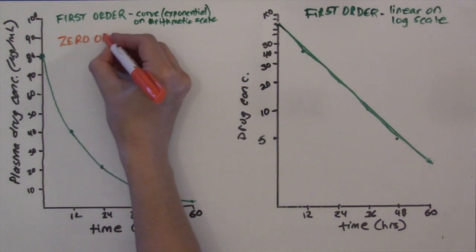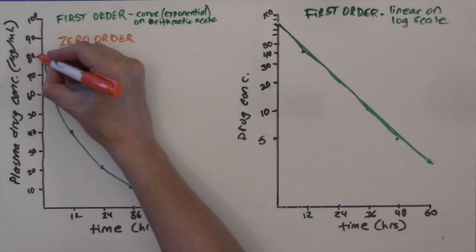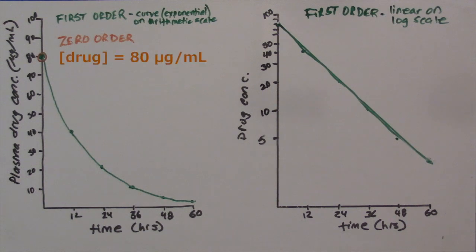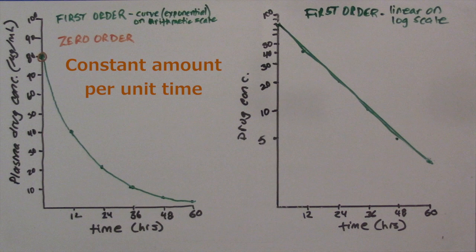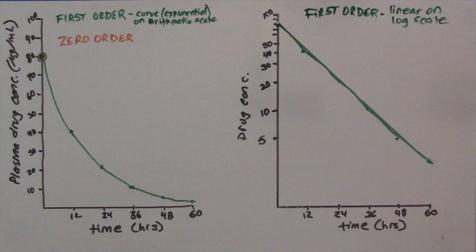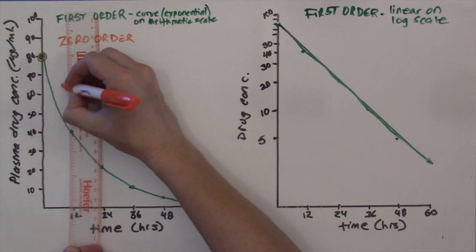Now let's switch gears and look at a zero-order graph. It's going to look a little different. We are always eliminating a constant amount of drug per unit time; the elimination rate is going to be the same regardless of the drug concentration. So let's give an IV bolus of drug number 2, and for simplicity, we'll say the concentration after this IV dose is also 80 micrograms per milliliter at the zero time point. With this drug, a constant amount is eliminated per unit time, so after 12 hours the concentration decreases by 15 micrograms per milliliter, down to 65 micrograms per milliliter.